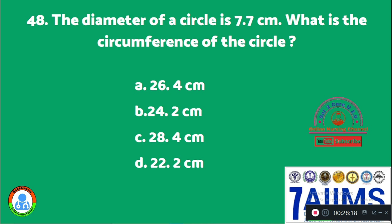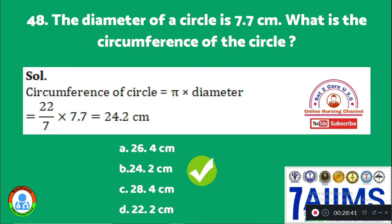Question 48: The diameter of a circle is 7.7 cm. What is the circumference of the circle? Option A: 26.4 cm. Option B: 24.2 cm. Option C: 28.4 cm. Option D: 22.2 cm. The circumference equals π × diameter = 22/7 × 7.7 = 24.2 cm. The right answer is Option B, 24.2 cm.